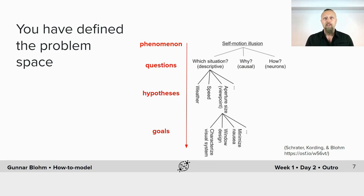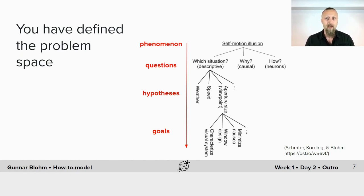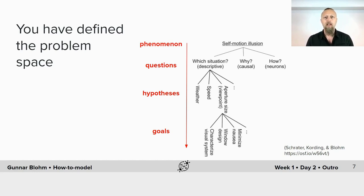Part of framing the question is to precisely define the problem space. In your project, you asked why this illusion occurs and whether it could be explained by unreliable vestibular signals. But you could have asked many different questions — for example, in which situation this phenomenon occurs, which would have been a descriptive 'what' question. Or you could have asked about the neuronal mechanisms leading to this illusion, which would have been a 'how' question. And for each of those different questions, you could formulate many different hypotheses — for example, for the descriptive question, we could hypothesize it's window size, or speed, or weather conditions that matter.